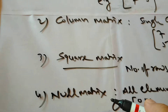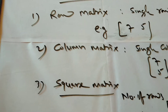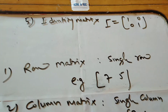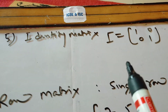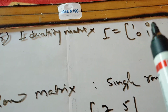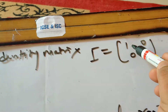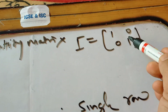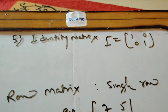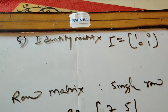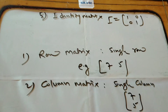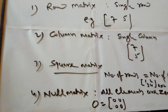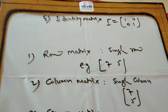One more type is the identity matrix. The identity matrix I is equal to [[1, 0], [0, 1]]. The leading diagonal elements are 1 and all other elements are 0. This leading diagonal contains elements a₁₁ and a₂₂. Such a square matrix is called an identity matrix, denoted by capital I. So to summarize: row matrix, column matrix, square matrix, null matrix, and identity matrix.